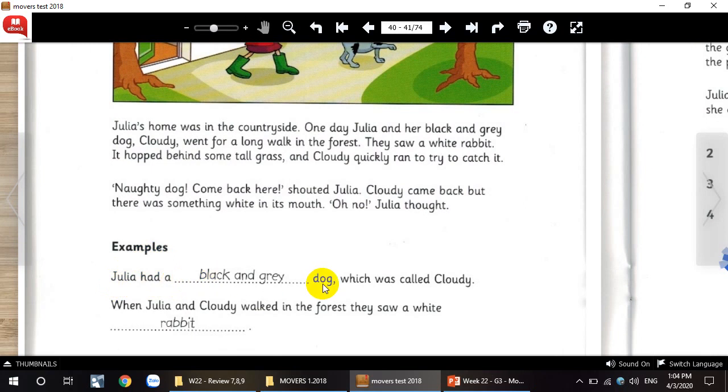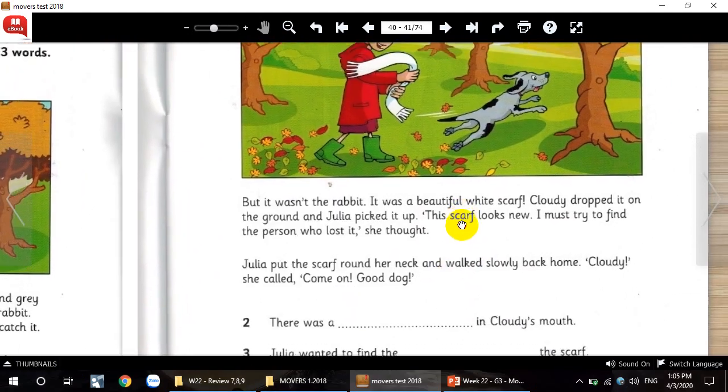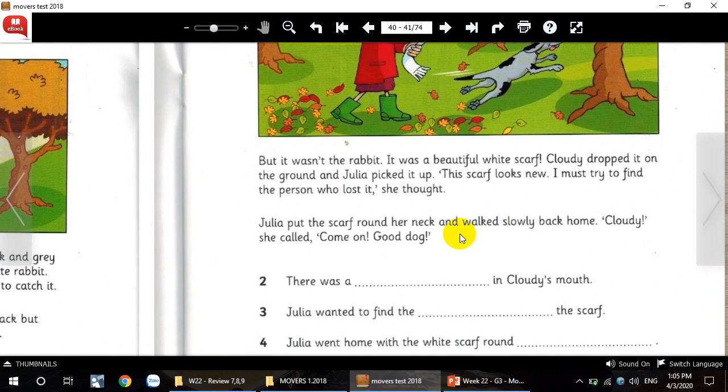Look at this sample here. Julia has a dog with words called Cloudy. Look at this sentence. One day, Julia and her black and grey dog. Julia had a black and grey dog called Cloudy. When Julia and Cloudy were in the forest, they saw a white rabbit. And they saw a white rabbit, here, rabbit. To do this exercise, you have to read the text carefully and you read slowly in each sentence, to find out the best answer, to choose one, two or three words to complete the blank, to complete the sentence. And next, please read at home. And finish this exercise at home.